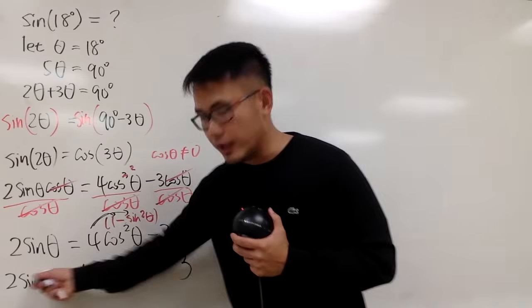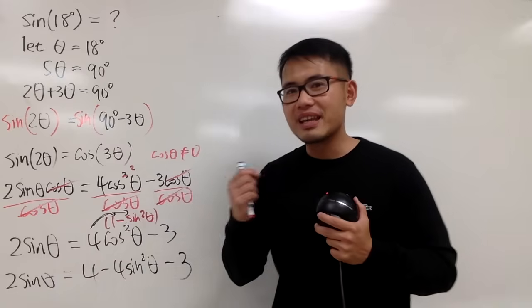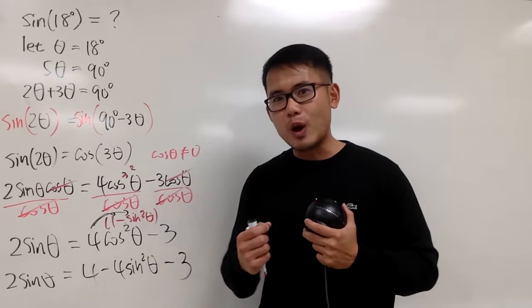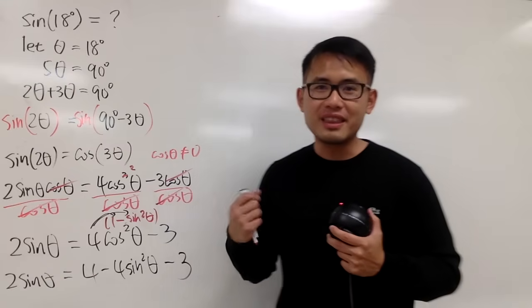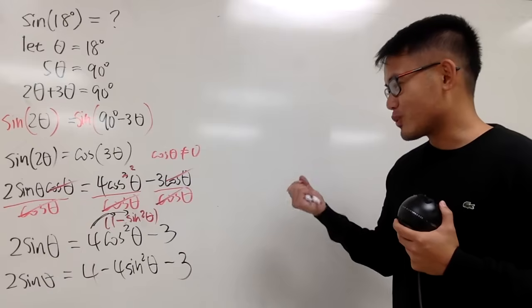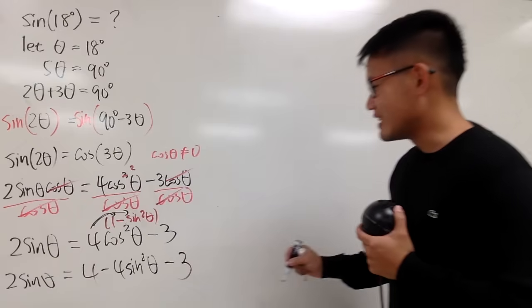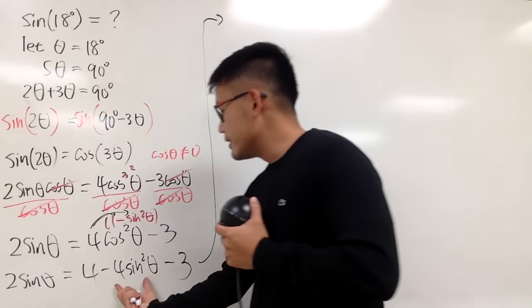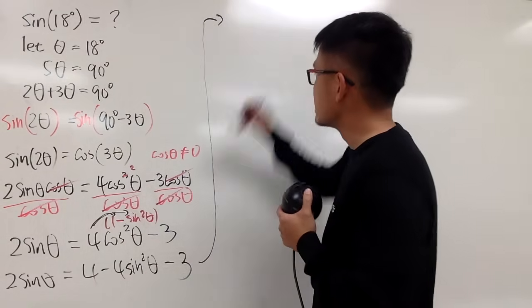And now, you see that we have an equation in terms of sine theta. And this part is sine squared theta, so this is the quadratic equation in terms of sine theta. And we have our secret weapon quadratic formula to help us out. So, that's nice. And now, we just have to clean things up a little bit.